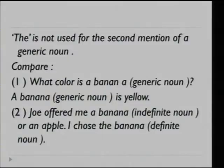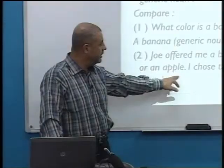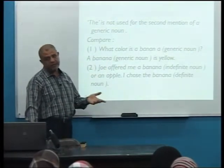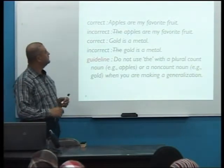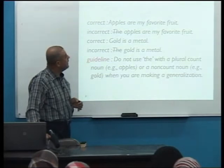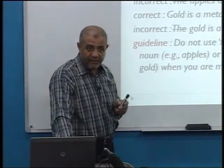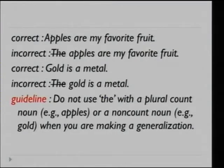'Just offered me a banana or an apple — I choose the banana.' The banana here is definite. But in 'what color is a banana,' it is generic. 'Apples are my favorite fruit' — apples here is a generic plural count noun. Don't say 'the apples are my favorite.'